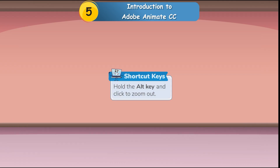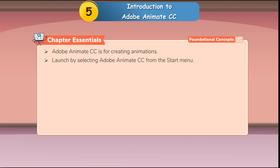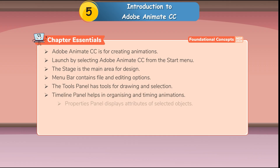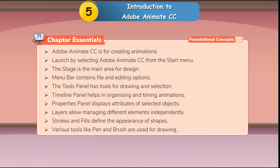Chapter Essentials: Adobe Animate CC is for creating animations. Launch by selecting Adobe Animate CC from the Start menu. The Stage is the main area for design. The Menu Bar contains file and editing options. The Tools Panel has tools for drawing and selection. The Timeline Panel helps in organizing and timing animations. The Properties Panel displays attributes of selected objects. Layers allow managing different elements independently. Strokes and Fills define the appearance of shapes. Various tools like the Pen and Brush are used for drawing.